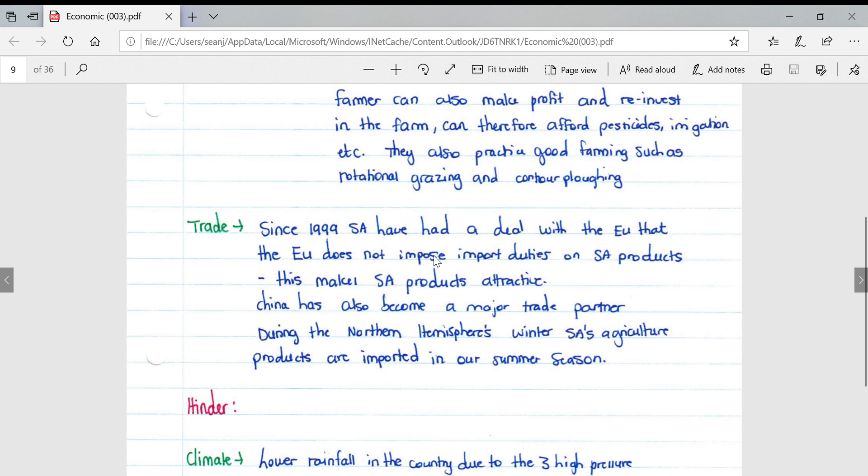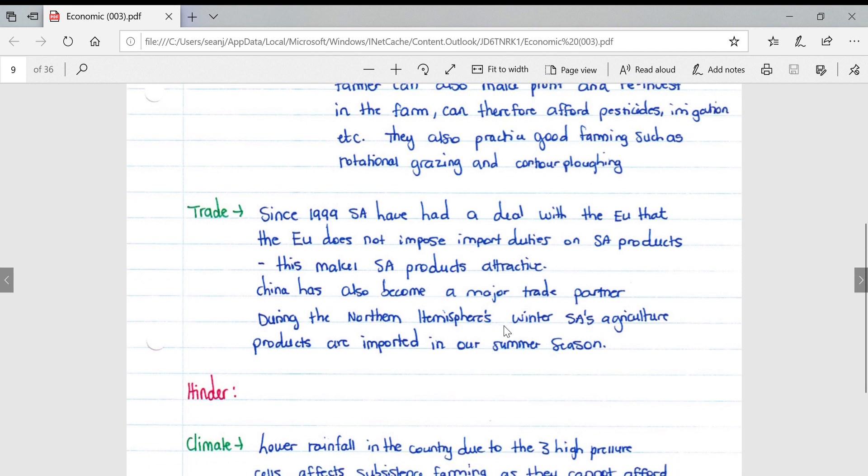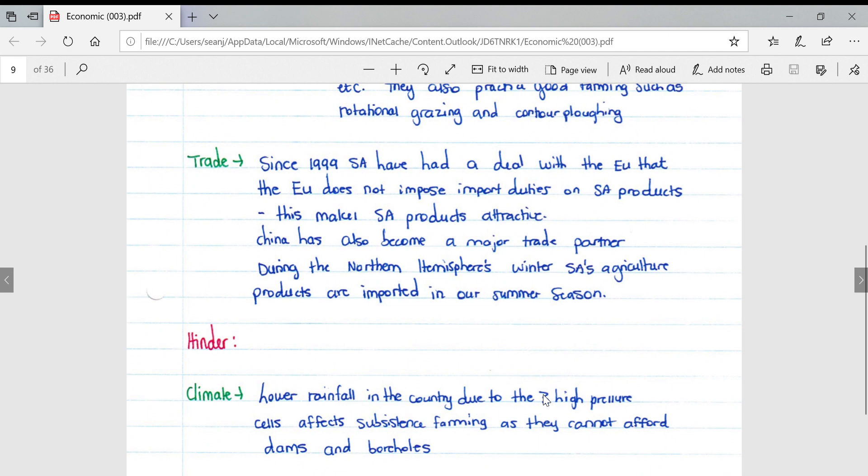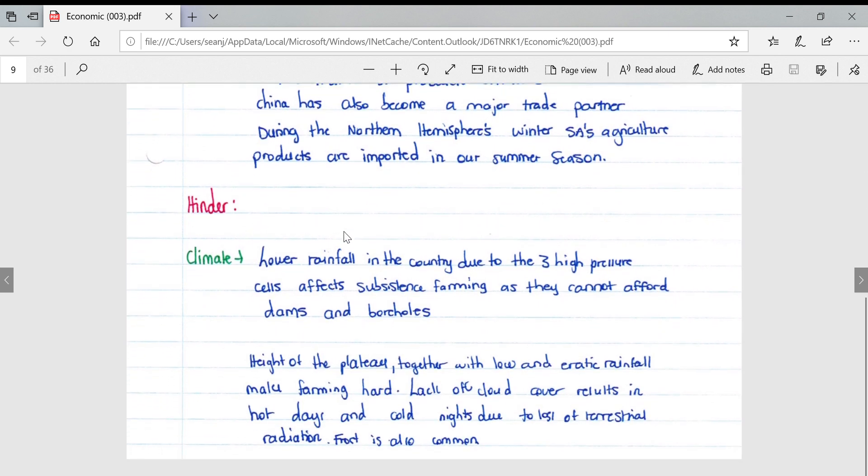For trade, since 1999 South Africa has dealt with the EU, which does not impose import duties on South African products, making them attractive. China has also become a major trade partner. During the northern hemisphere's winter, South Africa's agricultural products are important because it is our summer season where we get the best return on our agricultural products.